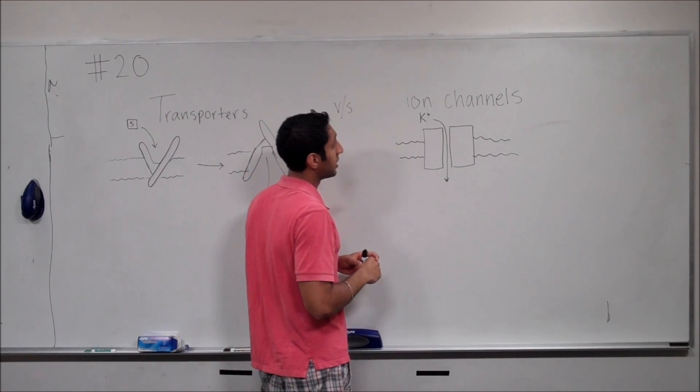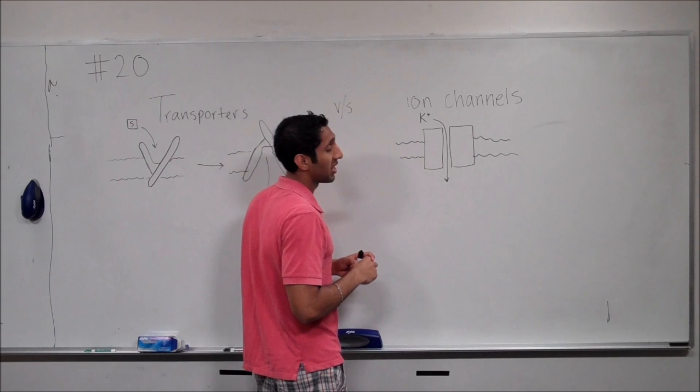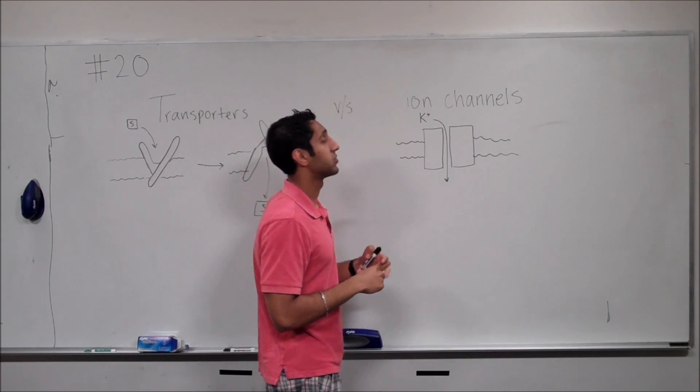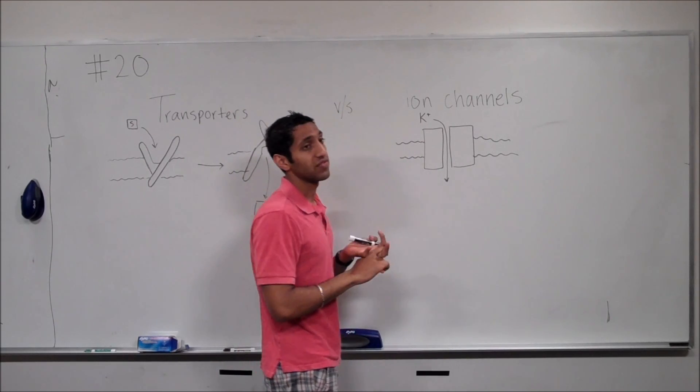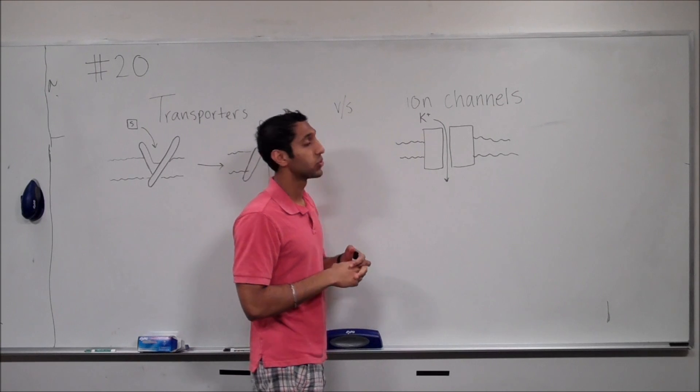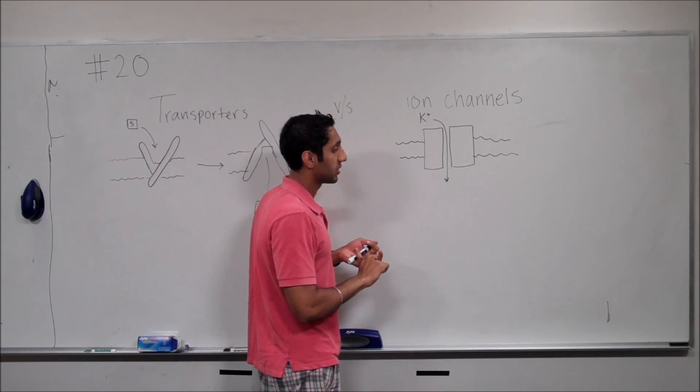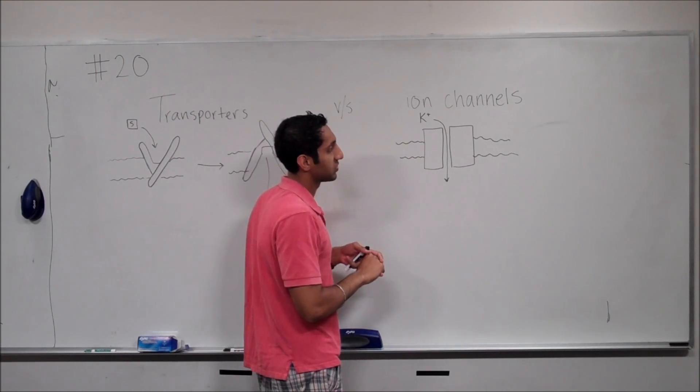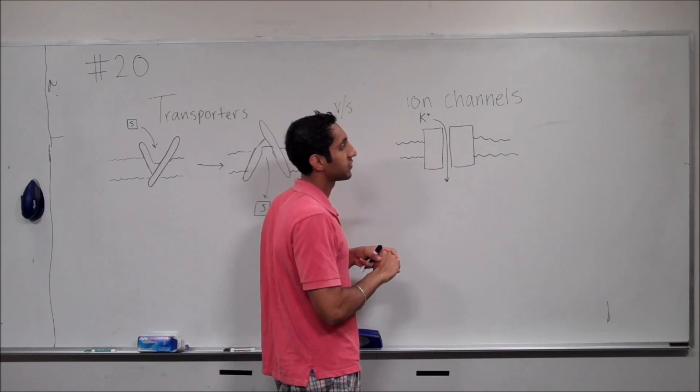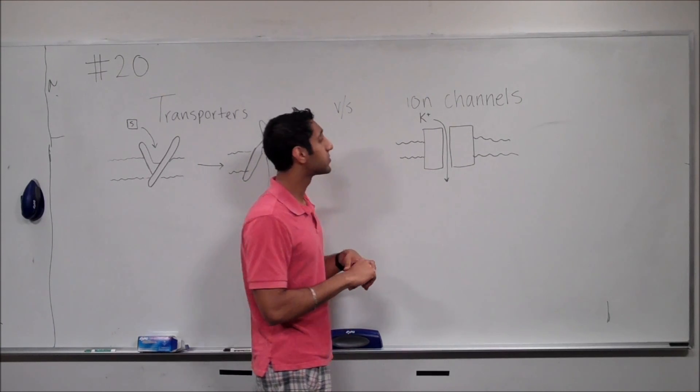Ion channels, on the other hand, deal strictly with ions like potassium, calcium, sodium, and you often find these in neurons or in regions of cells that require sensitive balance and electrolytes.